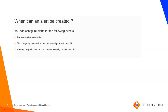You can configure alerts for the following events: if the service is unavailable, if CPU usage by the service crosses a configurable threshold, or if the memory usage by the service crosses a configurable threshold.